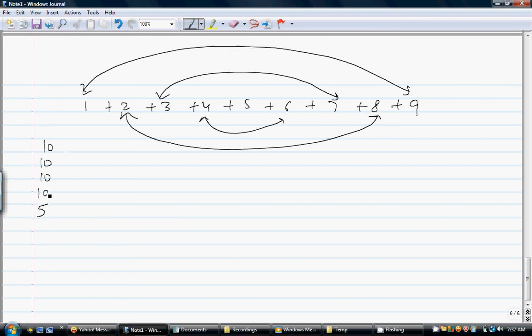So if you add all this up, it will be 4.5 times 10. So we have 4 times 10 and half times 10, so 4.5 into 10, or that is 9 by 2 into 10. Yeah, so that is equivalent to x into x plus 1 divided by 2.